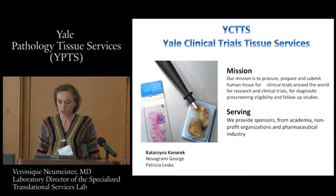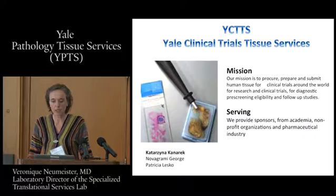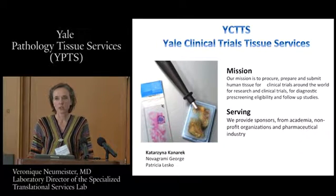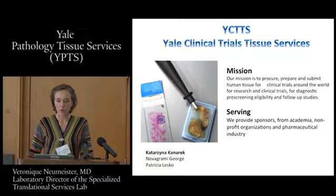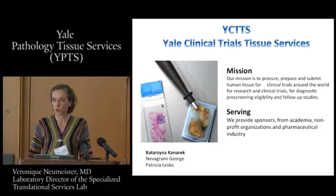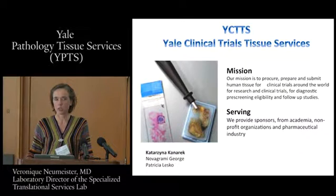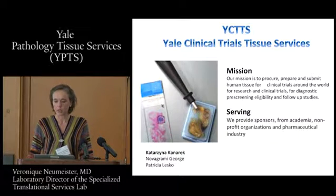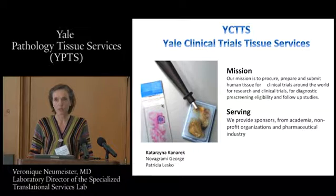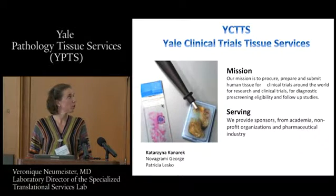The Yale Clinical Trial Tissue Services works with the Yale Cancer Center in terms of procurement, preparation, and submission of human tissue for all clinical trials initiated at the Yale Cancer Center, and then distributes slides or blocks worldwide. The demands are increasing and they are very busy, so that's going really well.